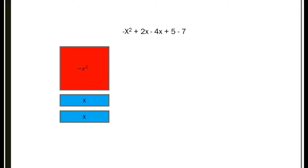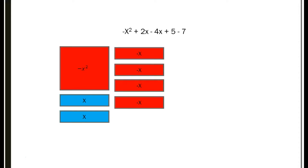The next one we're going to have are the two x's. Notice the squares are a little bit different size from the red one because they're not of the same variable. Then we have minus 4x. Notice the 4x and the 2x are the same size because both of them are x's, but the red ones represent negative 4 and the blue ones represent positive 2.